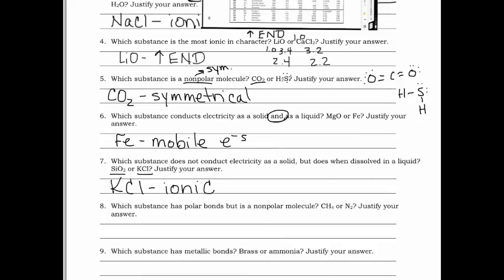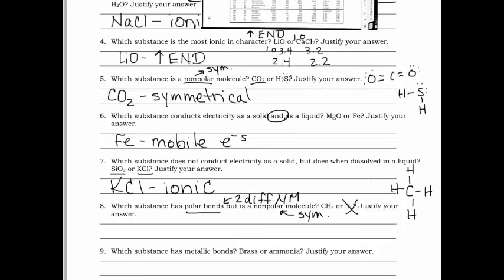Question eight: which substance has polar bonds but is a nonpolar molecule? Polar bonds mean two different non-metals. N2 is two of the same non-metal, so its bonds are nonpolar — eliminate it. Drawing CH4, carbon makes four bonds. The bonds are polar because they're between two different non-metals, but the molecule is symmetrical, so it's nonpolar. Answer: CH4. Justification: two different non-metals, but it is symmetrical.